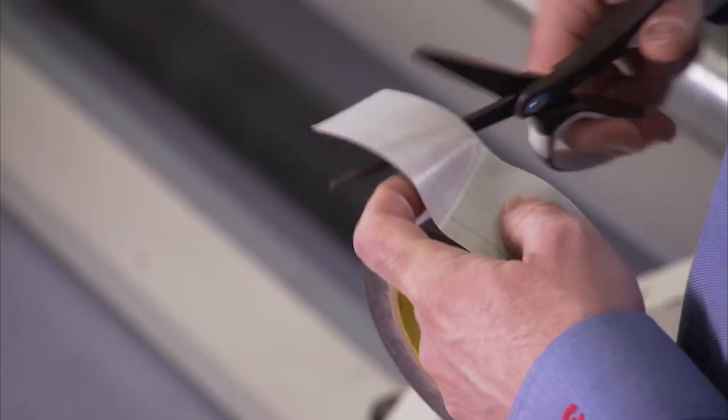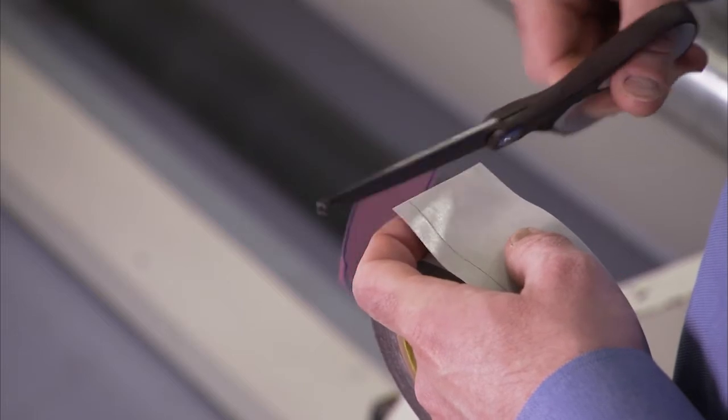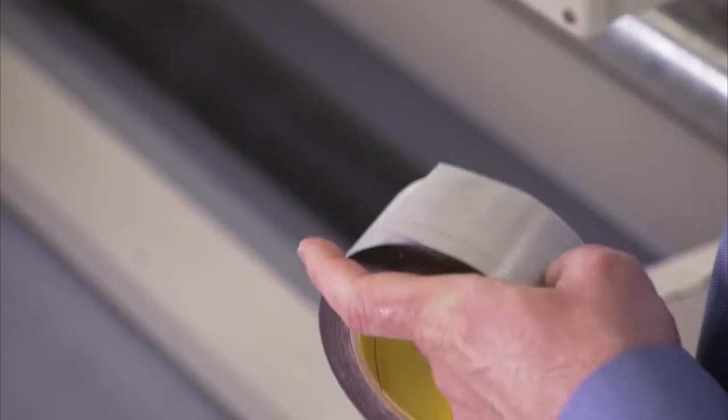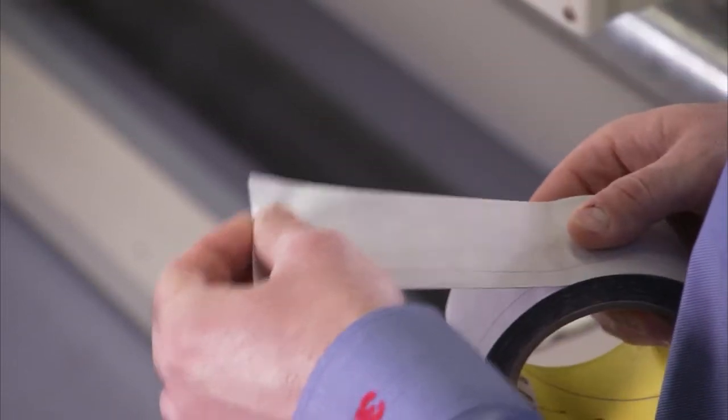To prevent this, when starting a roll, unroll about 3 inches and cut off the first piece. Start the tape from the middle of the cut edge.